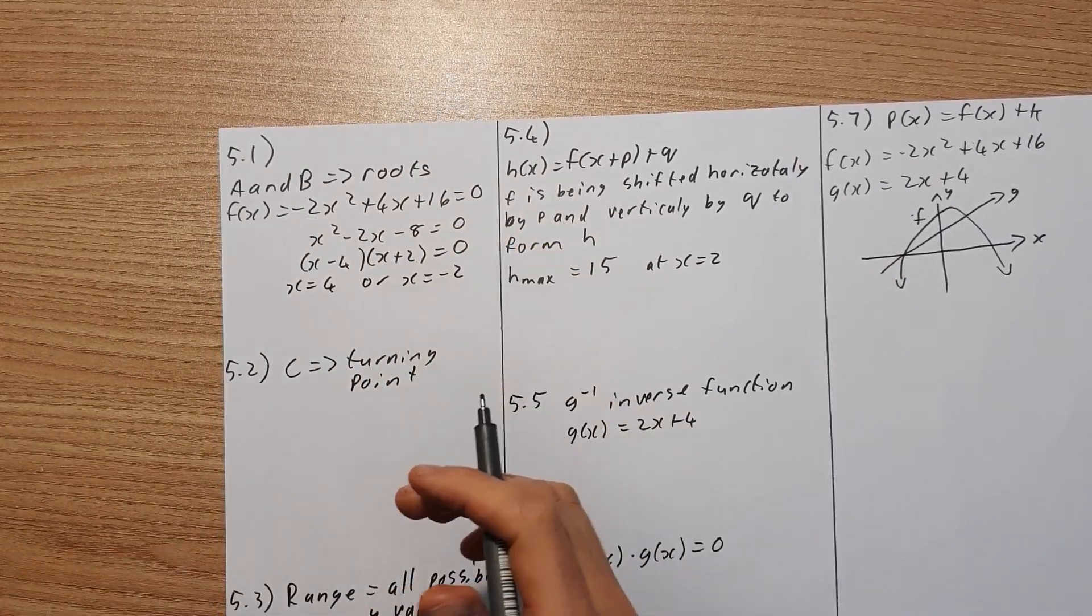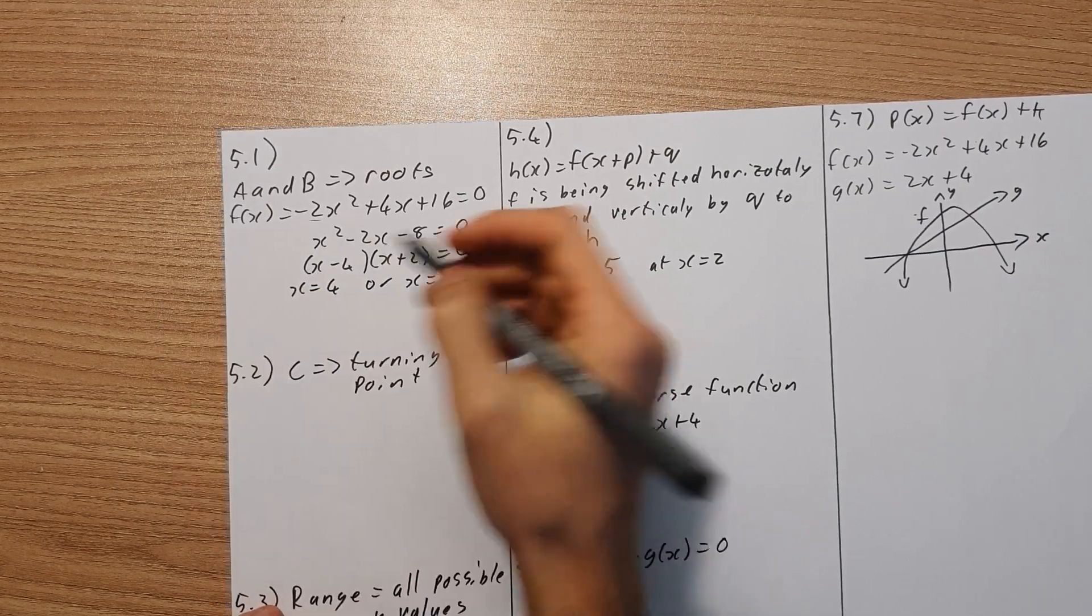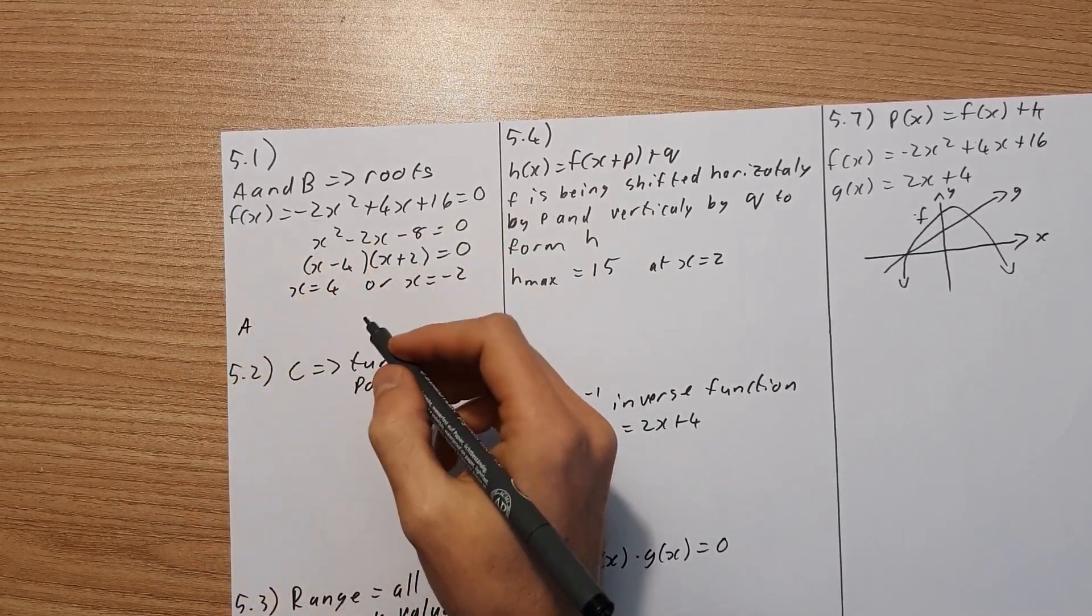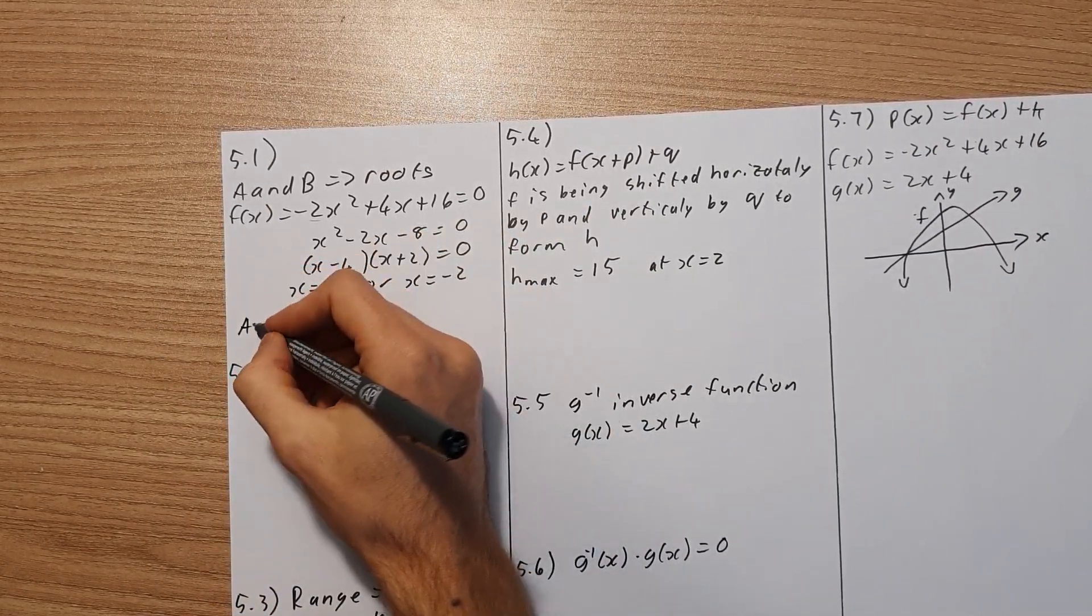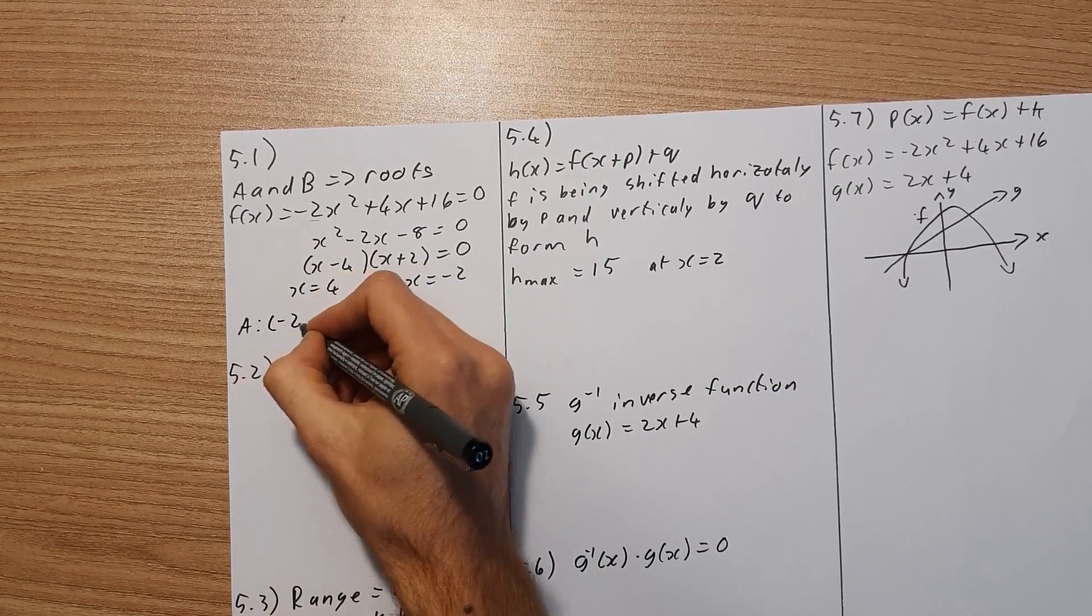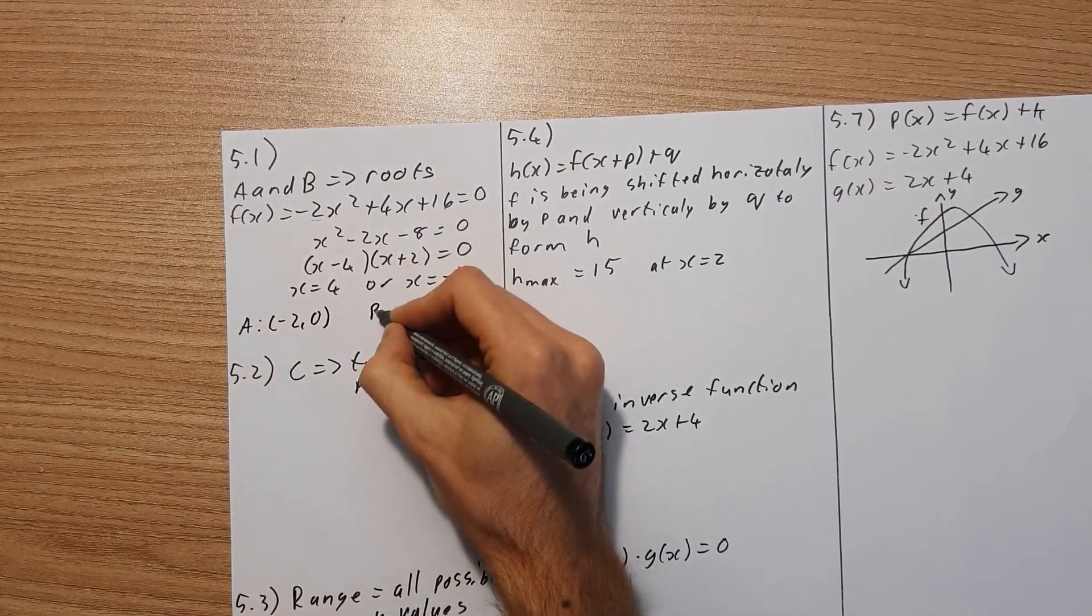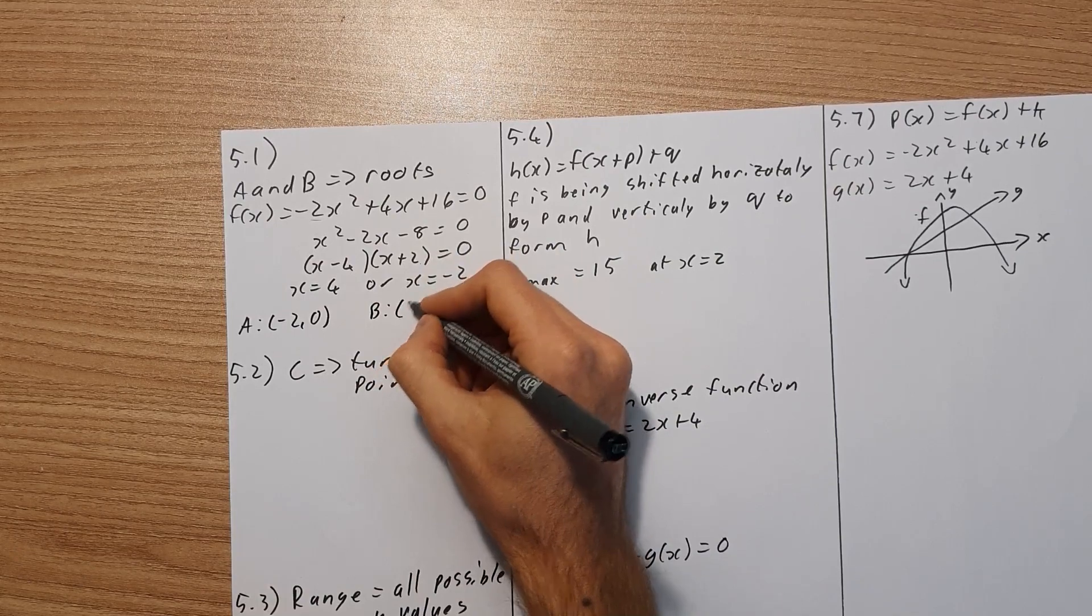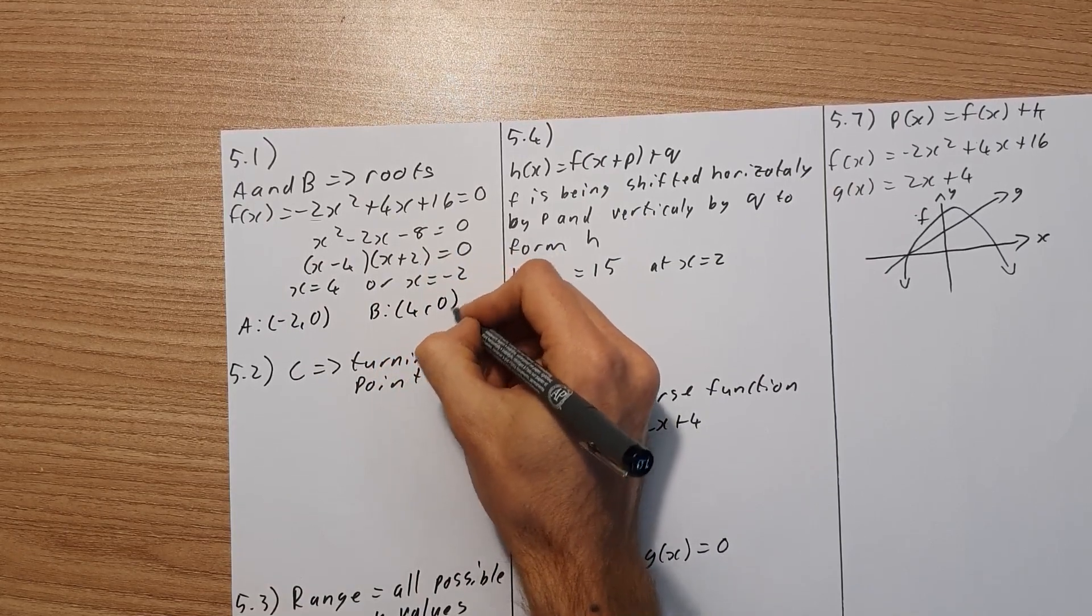But you're not done. You need coordinates for your final answer. So we can see that A is in the negative quadrant. So A is then going to be negative 2 and 0, and B is in the positive quadrant. So therefore, it's going to be 4 and 0.